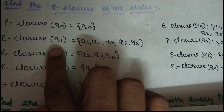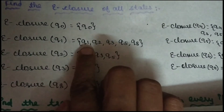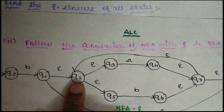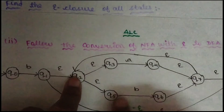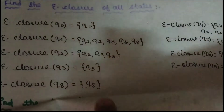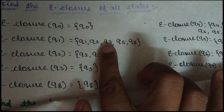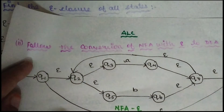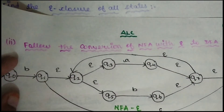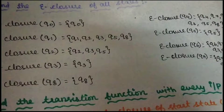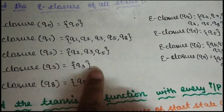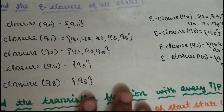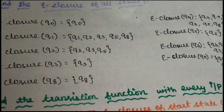If you see the e-closure of Q1, let us update the e-closure of Q1. In the state, where are the epsilon moves? In Q1, there is Q2. In Q2, there is Q3 and Q5. There are Q1, Q2, Q3, Q5. Here is Q3 and Q5. Where are the epsilon moves? There is an epsilon move — here is Q8. That's why we have Q8. We will update the e-closure of all states. Now we have e-closure of all states.